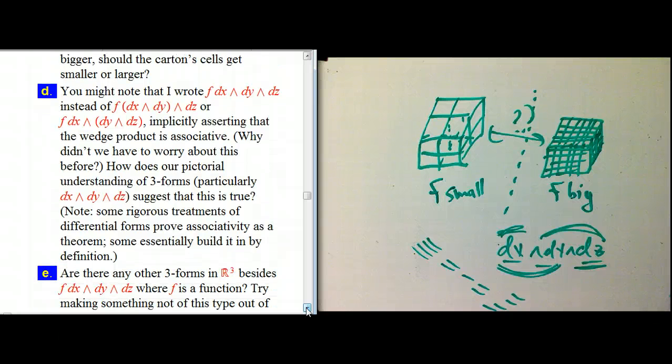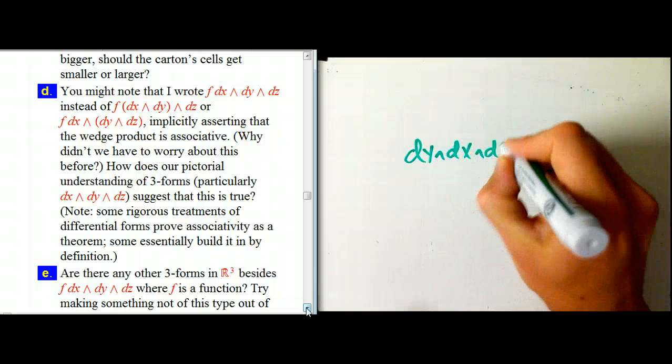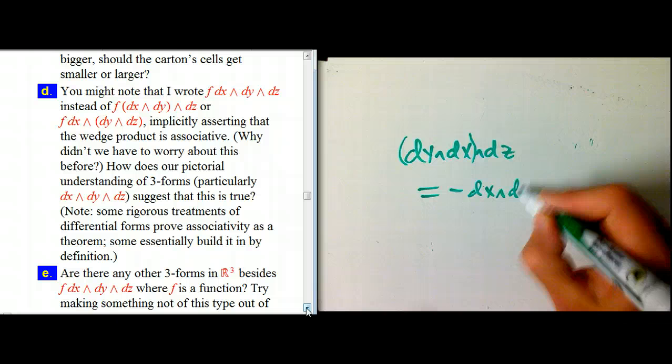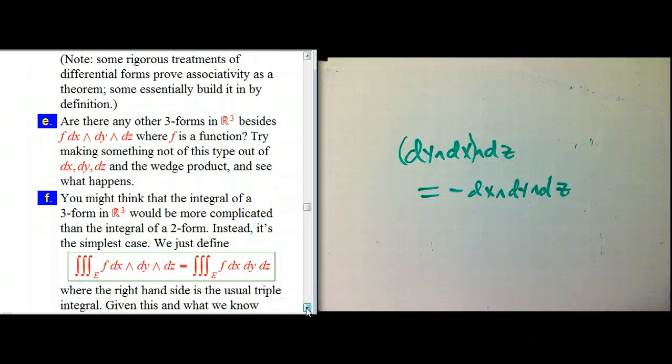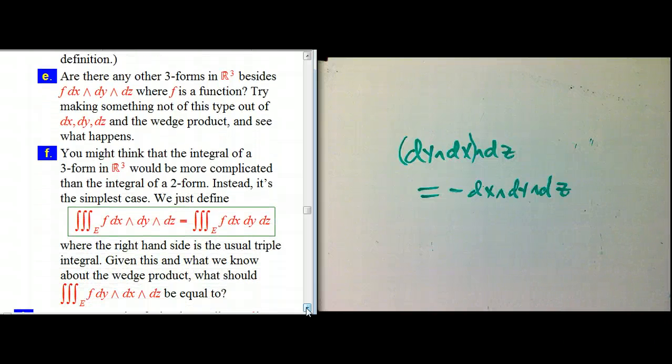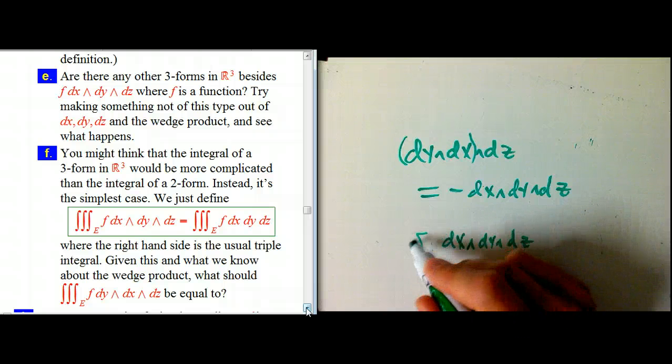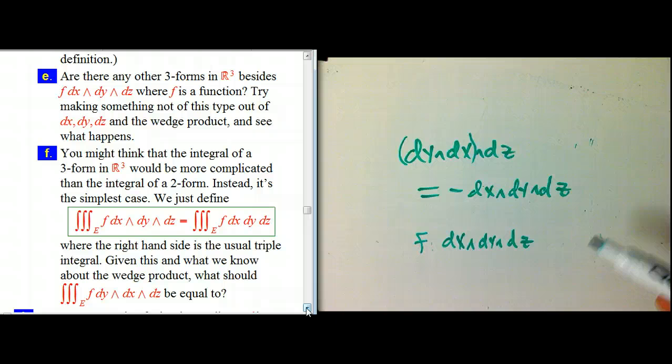Now, the anticommutativity is going to be very interesting. So, for example, dy wedge dx wedge dz, let's temporarily put some parentheses on there. Ah, that's minus dx wedge dy wedge dz. And that, in fact, has a lot to do with part e here. Let's go up to that. Part e asks, could I create anything else? I've taken dx wedge dy wedge dz in that order, and then I put a function in front of it to make the cells get bigger or smaller in various places. Is that the only example? There must be many other examples. Three forms must be abundant and complicated.